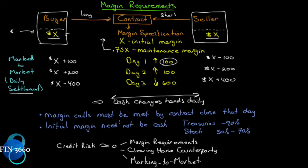Margin calls must be met by contract close that day — and this sets up a bit of a difficulty. If you have one account and there's a margin call on it, there is no way to meet the call that day. You cannot get money into your trading account that fast. Even if you initiate a transfer from your bank first thing in the morning, it takes sometimes two, three, four days to clear through all the proper channels before it hits your account. You've got to settle up that day.